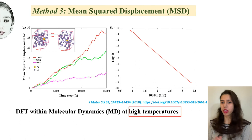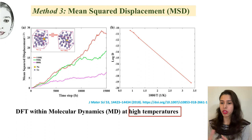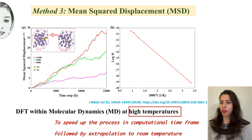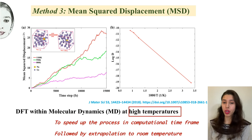This diffusivity coefficient is then used to calculate the energy barrier using the Arrhenius equation. Here is an example of mean square displacement: the system is heated up at different temperatures for a longer duration — as you can see here, 15,000 femtosecond time steps. High temperature is preferred because in the computational domain, the time steps are in the range of picoseconds, femtoseconds, or nanoseconds, which is too small for any diffusion phenomena to take place. So the process is sped up by heating at high temperatures, the diffusivity coefficient is calculated, and then extrapolated to room temperature. It is important that this high temperature remains below the melting point of the system.